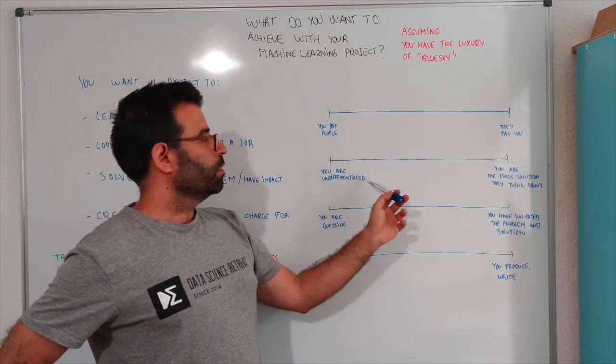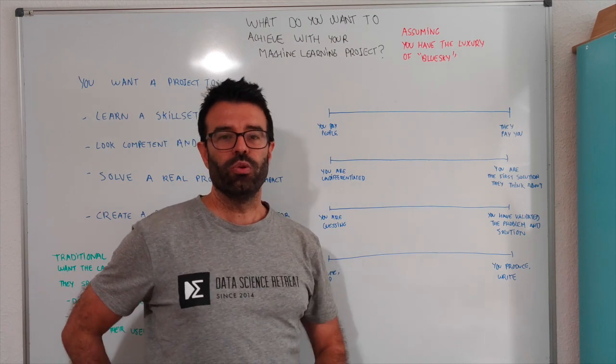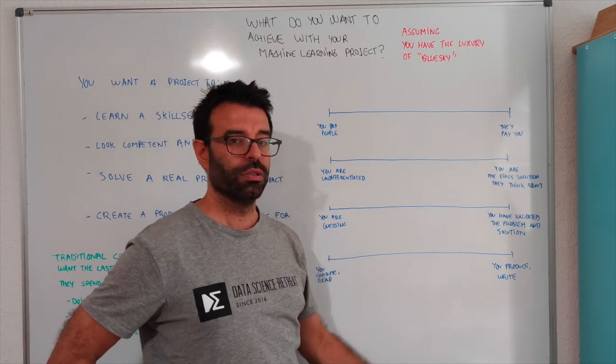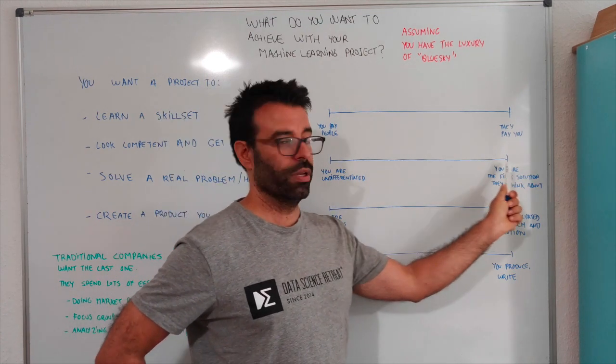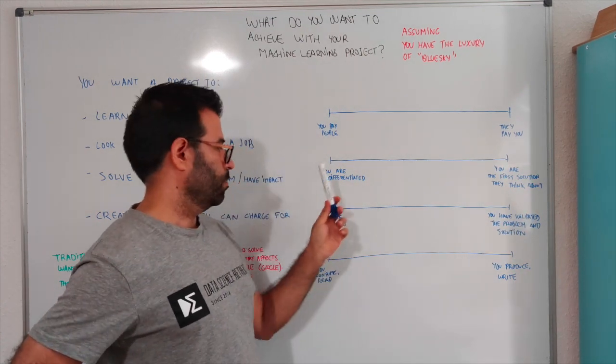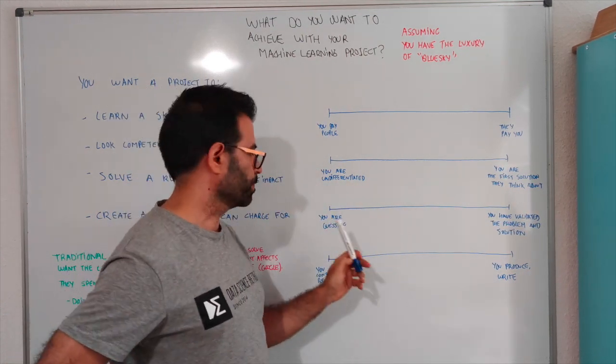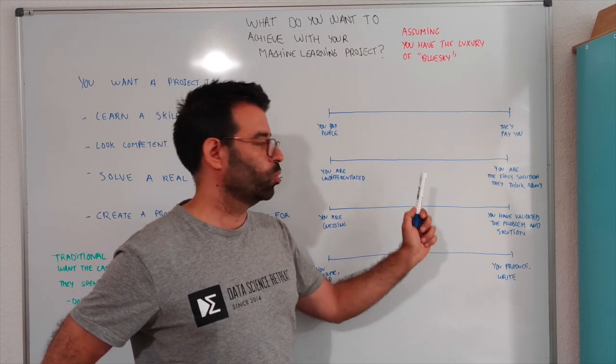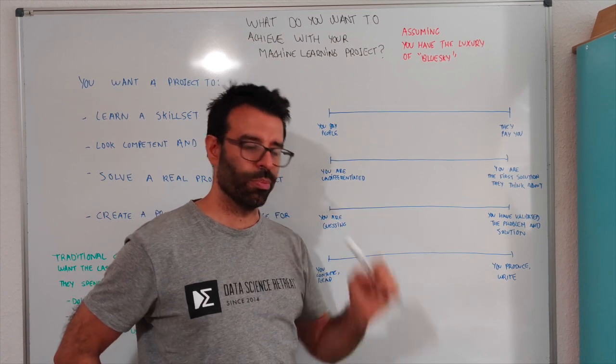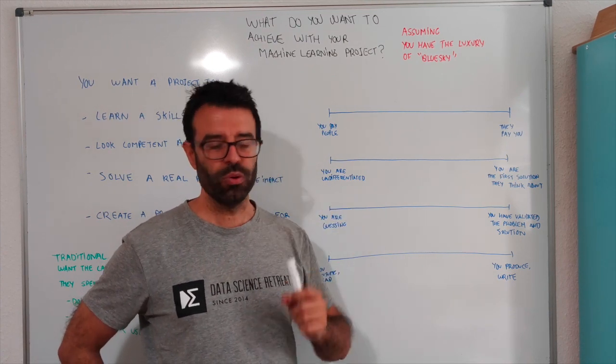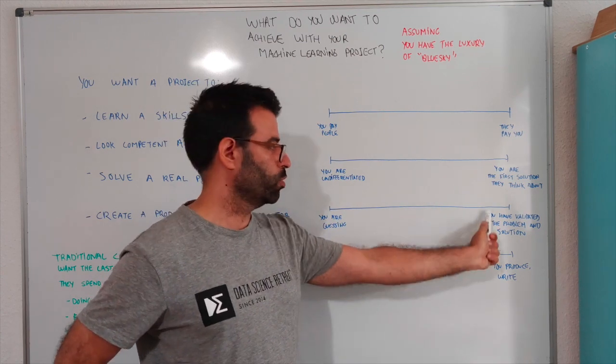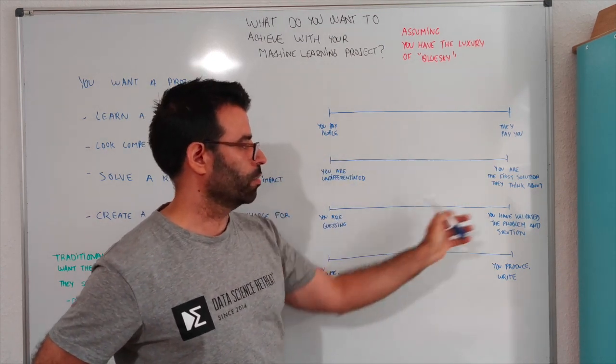Now, you can be undifferentiated. You can be one of the many to-do lists. Or you are the first solution that people think about. You want to go this way as well. This is hard as hell. You can go from guessing the problem to be in a spot where you know the problem really well. You are the guy who knows about the problem the most in the world, and you have the solution. That is a wonderful place for you. So you want to go in that direction.